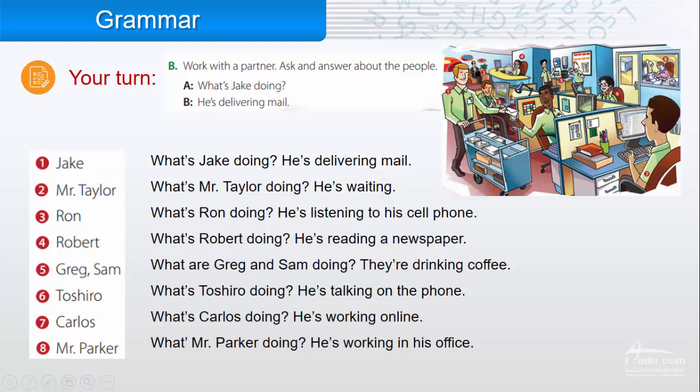Five: here, Greg and Sam. 'What are Greg and Sam doing?' 'They're drinking coffee.' Six: Toshiro. 'What's Toshiro doing?' 'He's talking on the phone.' Seven: Carlos. 'What's Carlos doing?' 'He's working online.' Eight: Mr. Parker. 'What's Mr. Parker doing?' 'He's working in his office.'